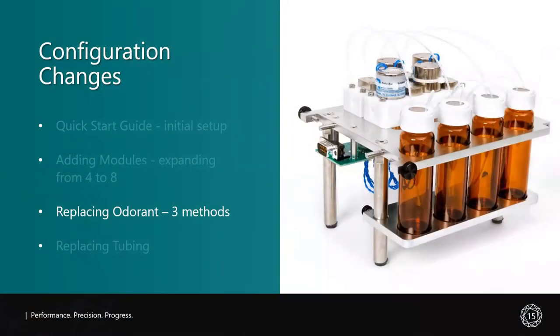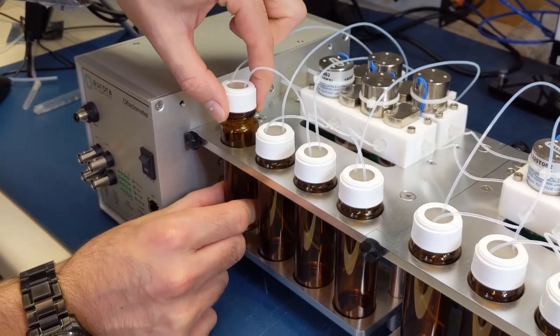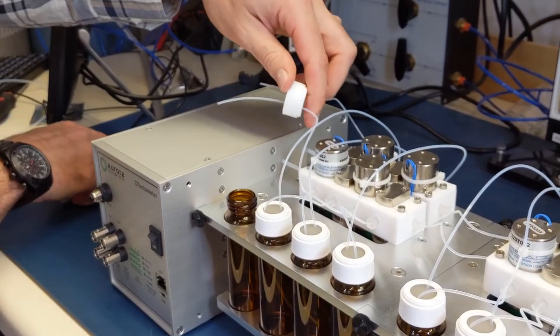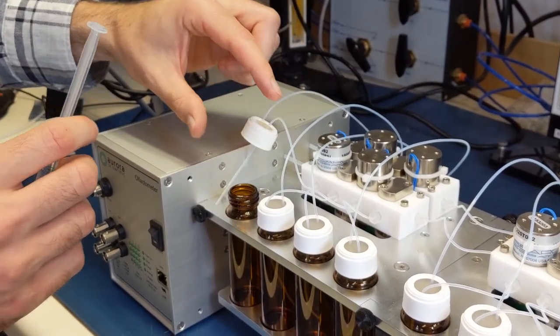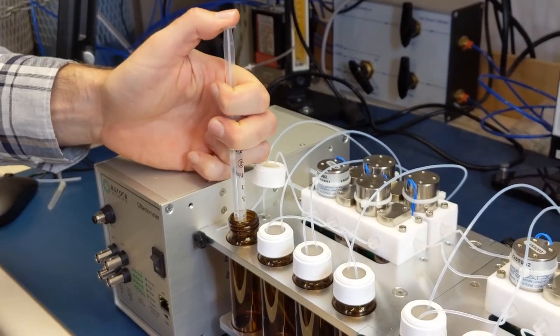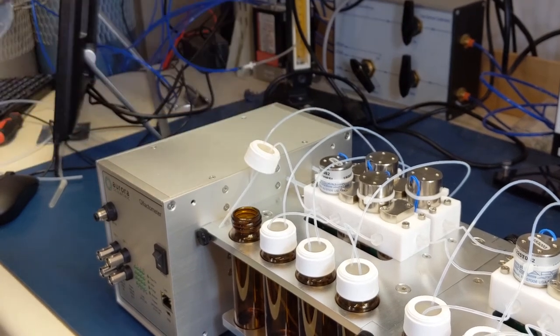Depending on the odorant used in your olfaction research as well as the experimental paradigm, special care may need to be taken to replace odorant in the vials. Here, I will demonstrate three common methods for doing so. Method 1 involves unscrewing the cap from the vial. Once the cap is removed, insert your odorant of choice. When finished, replace the cap and vial.